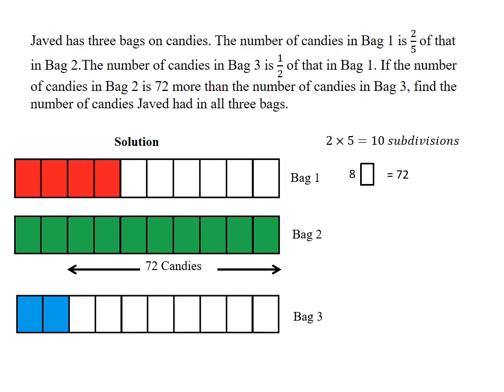We can therefore find one of the box. One of the box is equivalent to 72 divided by eight, which is nine candies. What this says is that each of these boxes that are shaded represents nine candies. So to get the total amount of candies that are represented here, we simply add all the shaded portions and multiply them by nine.